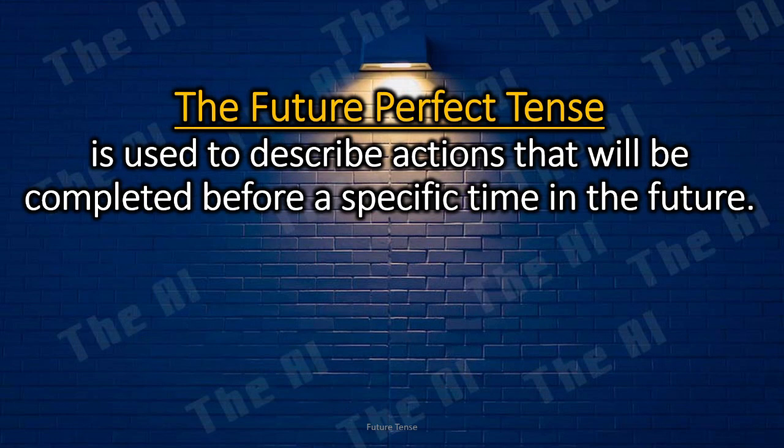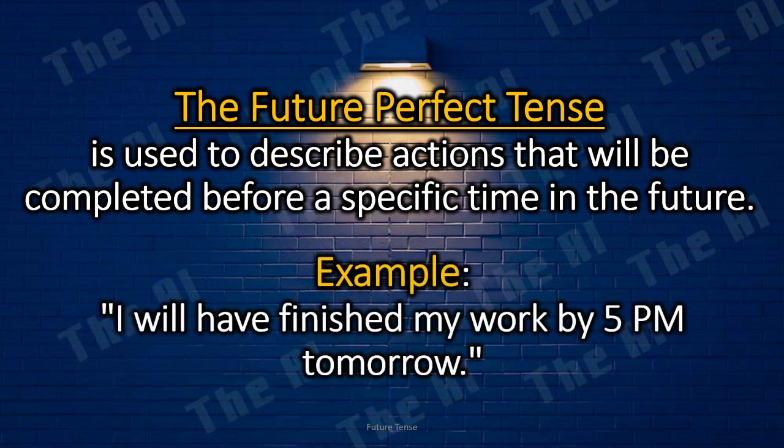The future perfect tense is used to describe actions that will be completed before a specific time in the future. For example, 'I will have finished my work by 5pm tomorrow.'